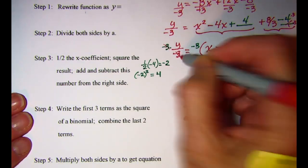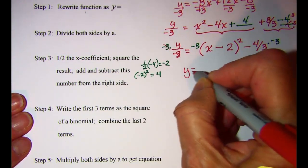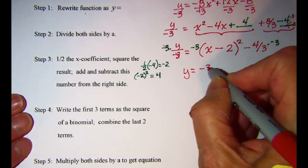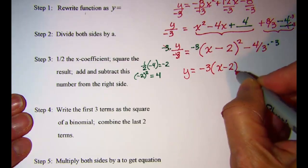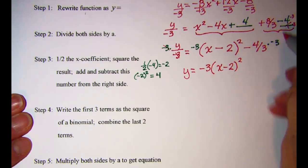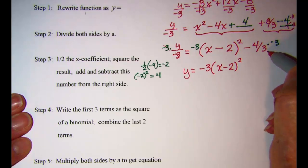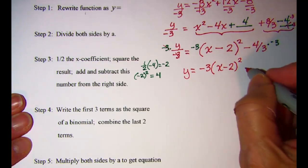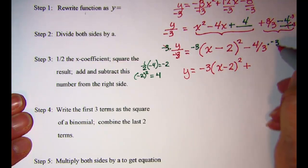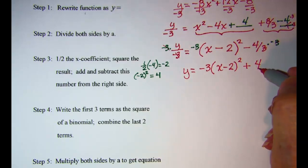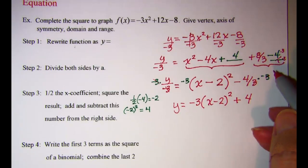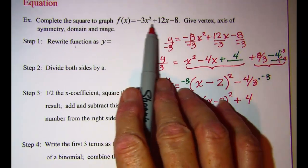These cancel and I have y equals negative 3 times the quantity (x minus 2) squared. And then multiplying a negative 4 thirds times a negative 3, that will give me positive, and then the 3's cancel, and I have positive 4. So this is my vertex form of this standard equation right here.